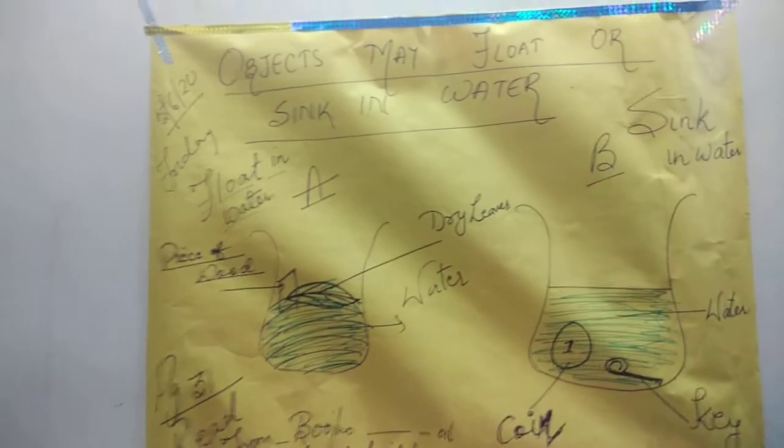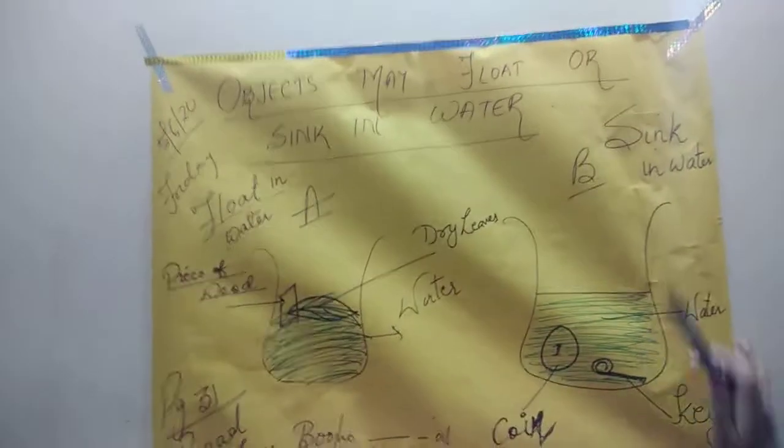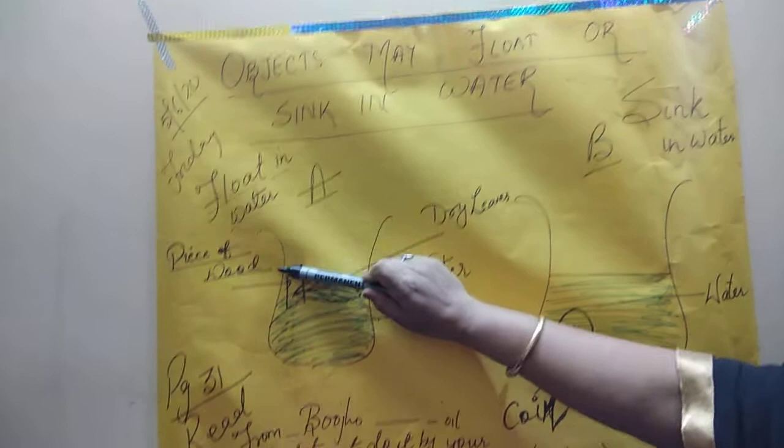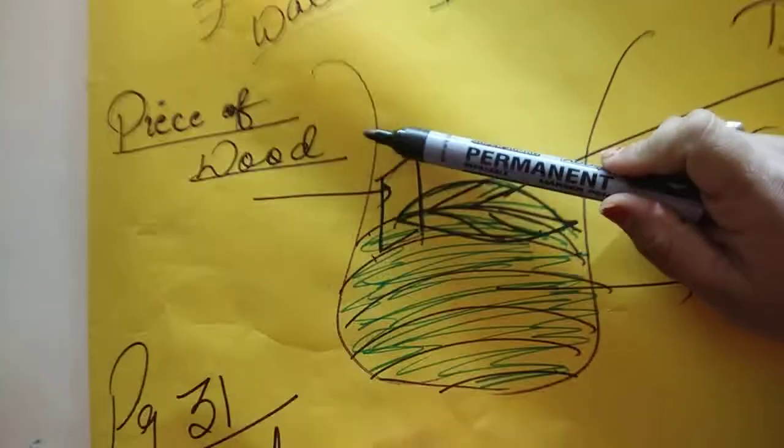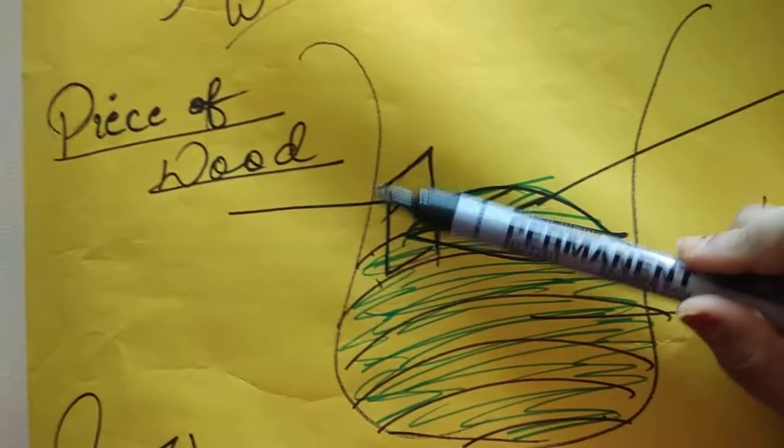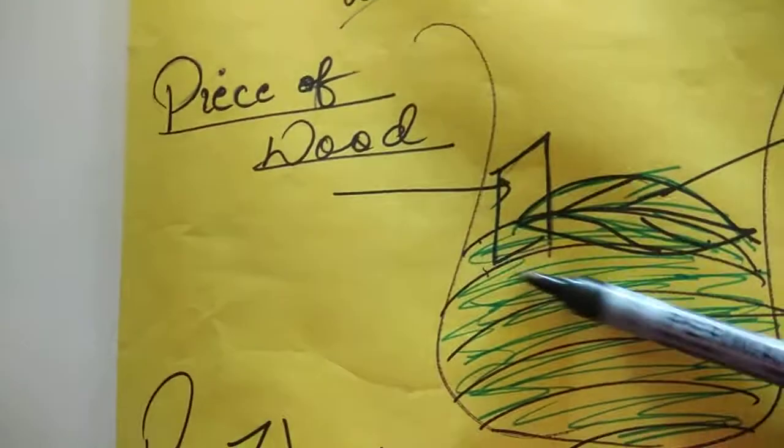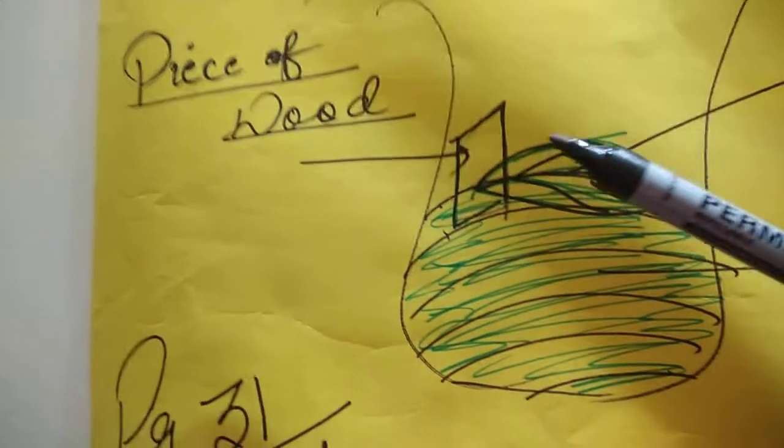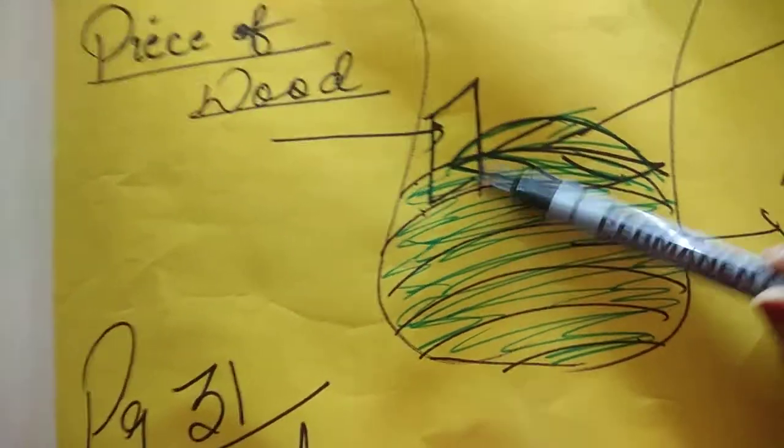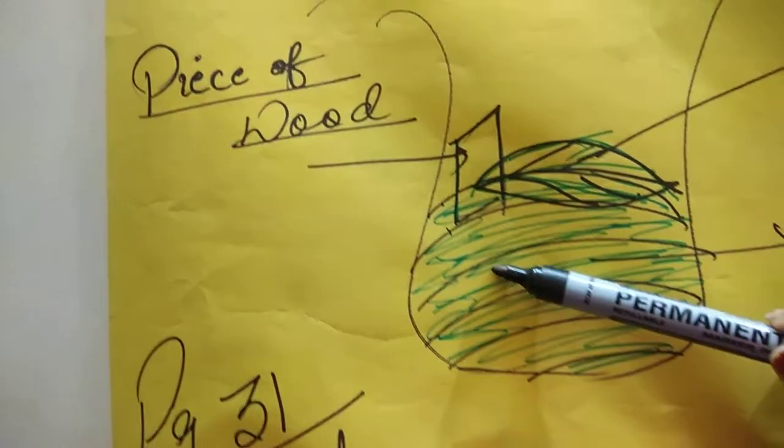Let me take certain examples children. That is a piece of wood, ek lakdi ka tukda. So piece of wood basically what will happen? Your answer should be it will float in water because that piece of wood is lighter than water.